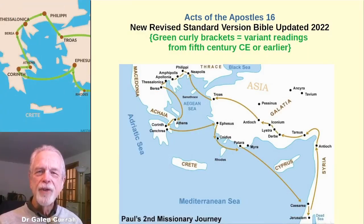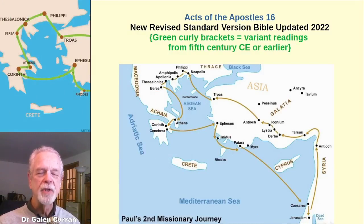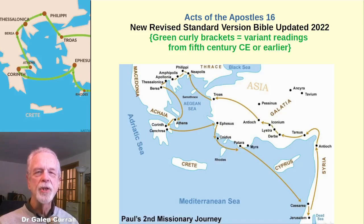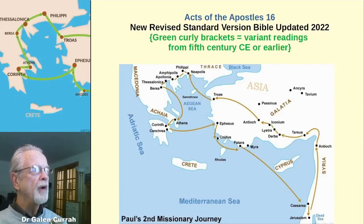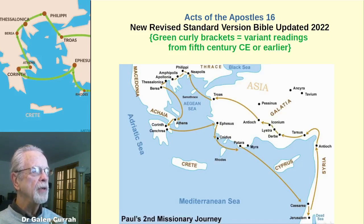Welcome to this brief introduction to chapter 16 of the book of the Acts of the Apostles in the New Testament. This material is intended mainly for those who lead Bible discussion groups with adult men. We shall be following the New Revised Standard Version of the Holy Bible, updated in 2022. Text found between green-colored curly brackets represents variant readings from 5th century CE or earlier Greek manuscripts.